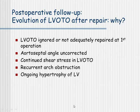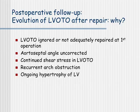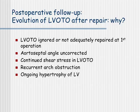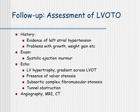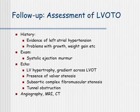Why do we have left ventricular outflow tract obstruction after surgical repair? There may be various reasons. One is that the obstruction was ignored or not adequately repaired at the first operation, leaving a residual gradient. The aorto-septal angle may be uncorrected, and there may be continued shear stress in the outflow tract. Recurrent arch obstruction may lead to ongoing hypertrophy of the left ventricle, thereby causing muscular narrowing in the outflow tract. When assessing LVOTO, we take history, check for a murmur, and on echo we pay attention to left ventricular hypertrophy, gradient across the outflow tract, valvular stenosis, the subaortic space with complex fibromuscular stenosis, or a possible tunnel obstruction.